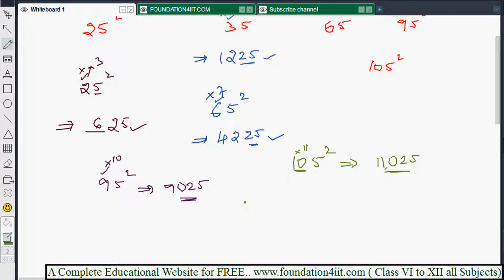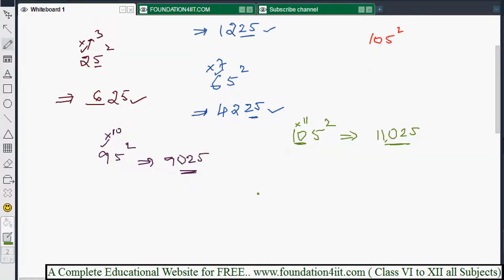So big numbers also you can do the same. We take 565, 565 whole square we need to find out. So don't do 565 into 565. Just 56 and multiply with 57. 56 into 57, you multiply. So 56 into 57 if you multiply, using the rule, you get 3192. Because you know already single digit multiplications, which we already explained.